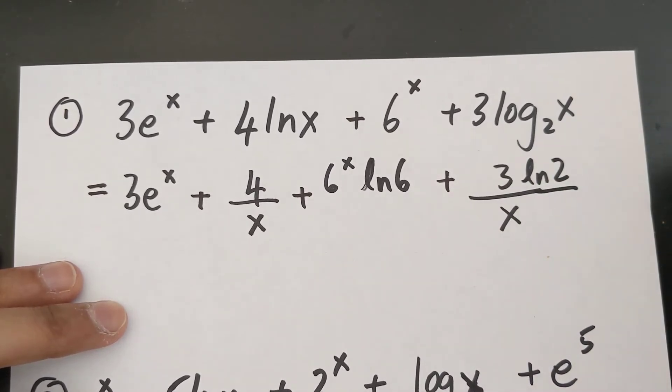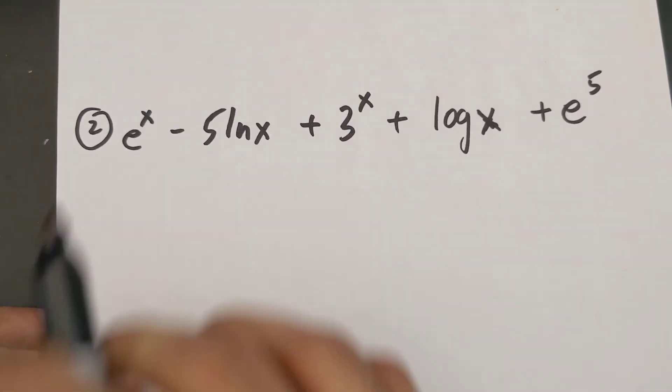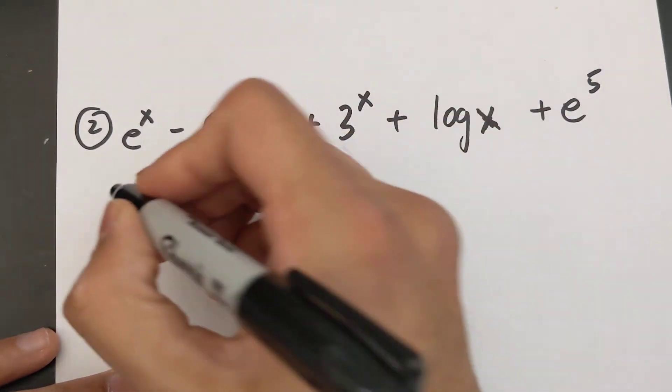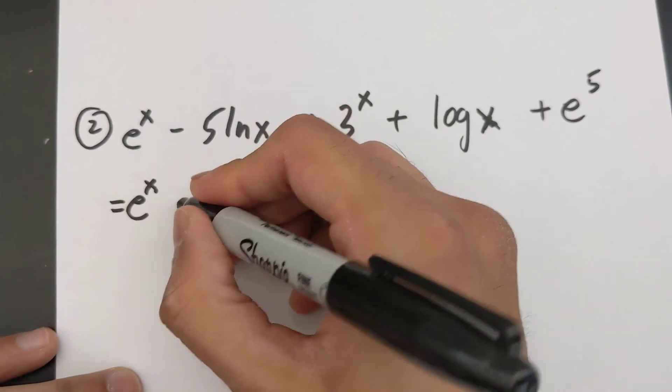Let's try it with this other example over here. Derivative of e^x is just the exact same thing, so e^x. The derivative of 5 ln x is just 5 over x.